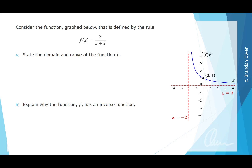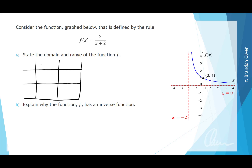For part a, we want to state the domain and range for the function f. We're going to set up a table with domain and range as columns, and rows for f and f inverse. For f, the domain goes from negative 2 to infinity — all the x values allowed inside this function. In interval notation, that is from negative 2 to infinity, where negative 2 is excluded and infinity is excluded with a round bracket.